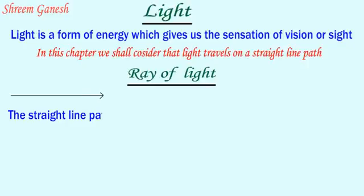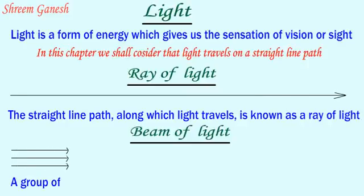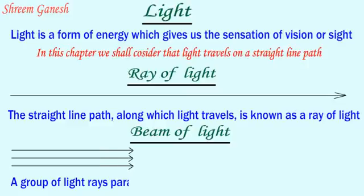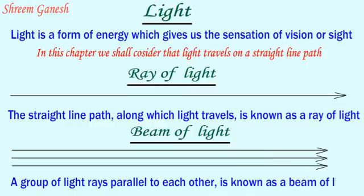The straight line path along which light travels is known as a ray of light. A group of light rays parallel to each other is known as a beam of light.